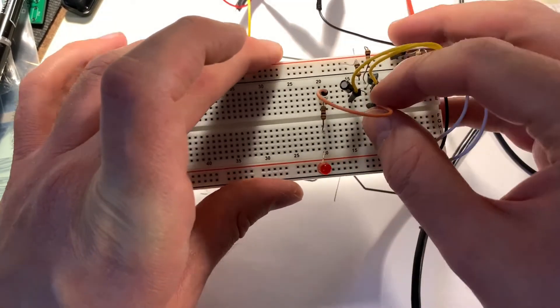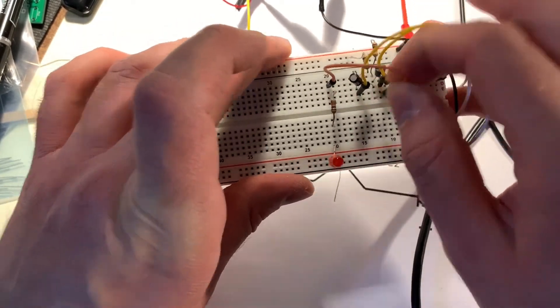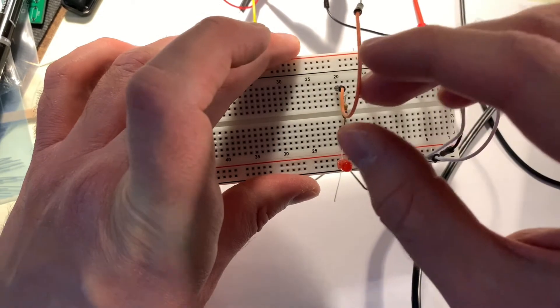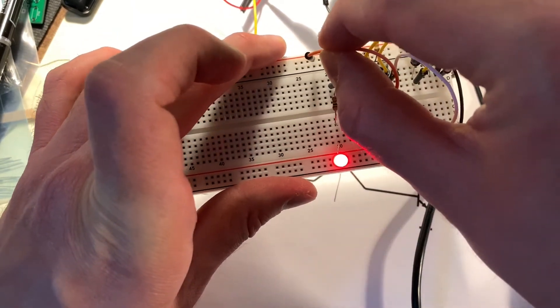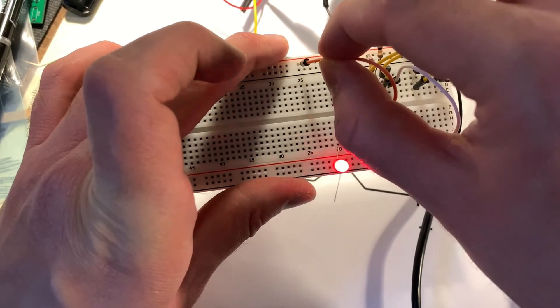If it's not lighting up, you can try taking out this wire for the LED and just setting it directly to 5 volts, and make sure that the board is being powered properly.